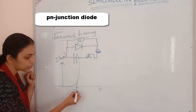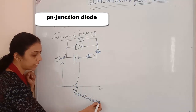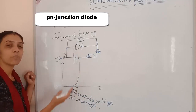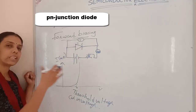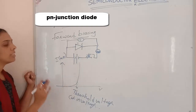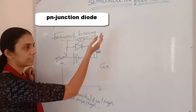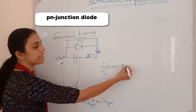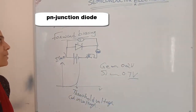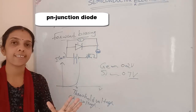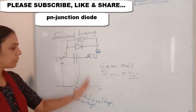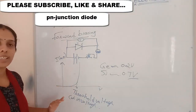The voltage at which current starts to increase rapidly is called the threshold voltage or cut-in voltage. Beyond this point, there is free movement of electrons and current flows easily. For germanium this is approximately 0.2 V and for silicon it is 0.7 V.